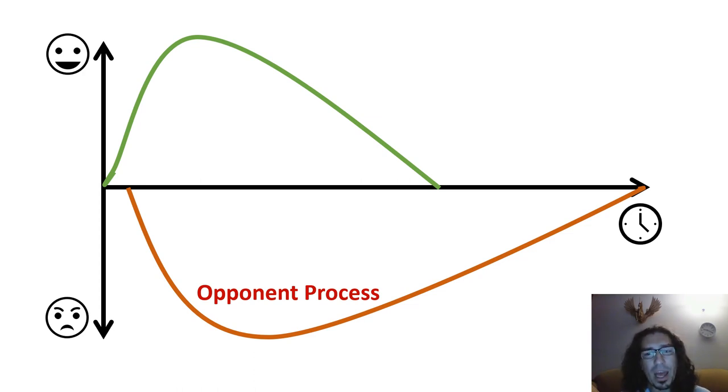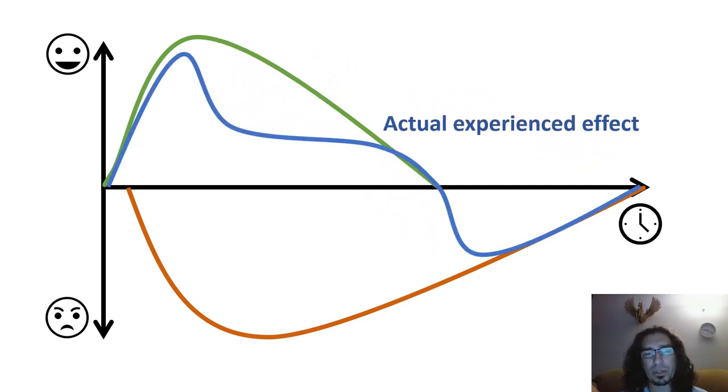So how does that actually look for us in the real world? How do we experience this? The actual experienced effect that comes in in the opponent process theory is that at the beginning, we have a bit of a spike.